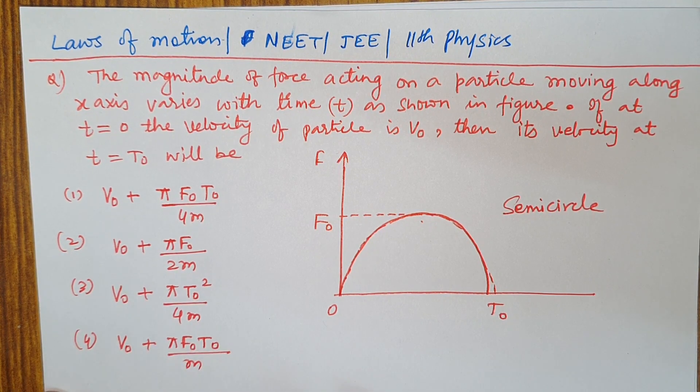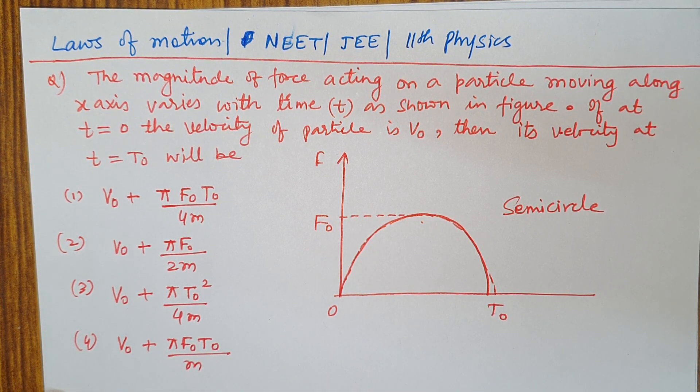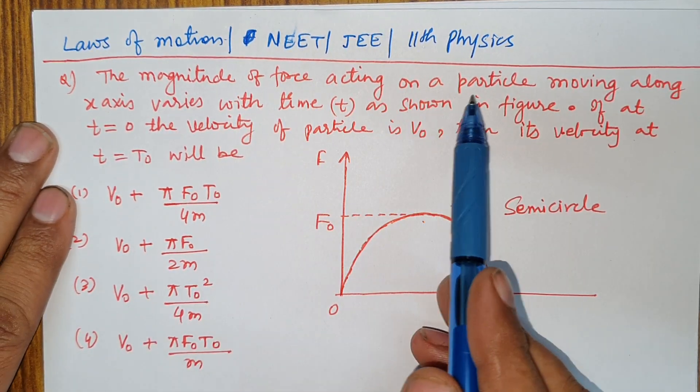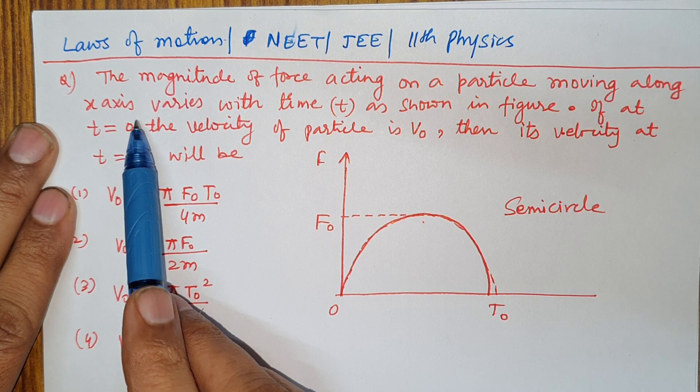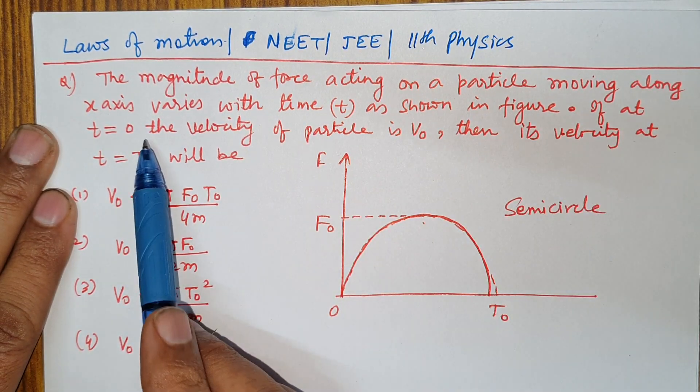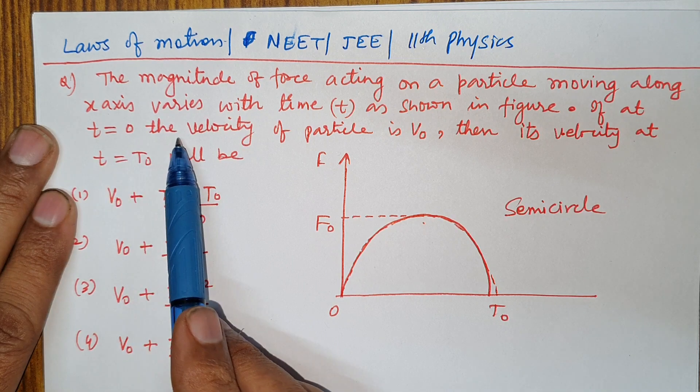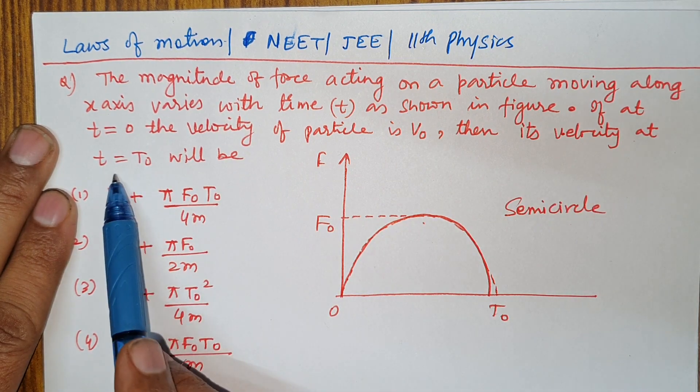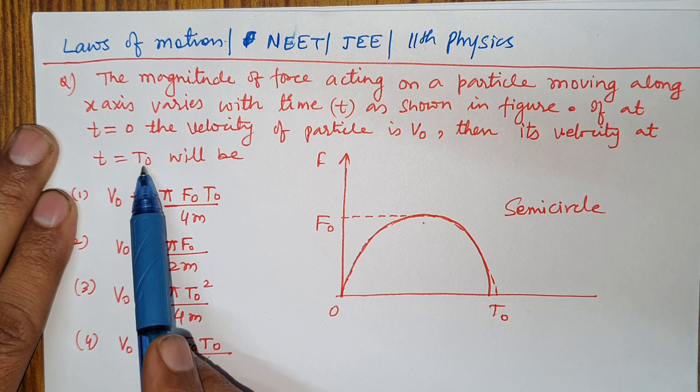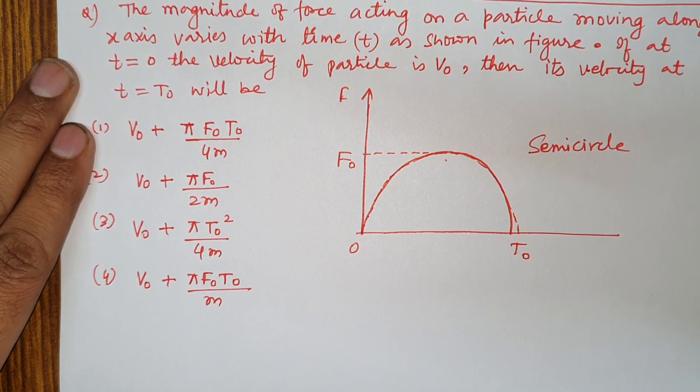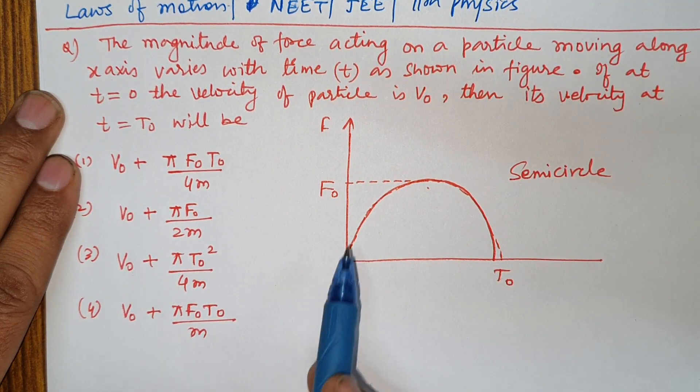Hello dear students, laws of motion NEET question. The magnitude of force acting on a particle moving along x-axis varies with time as shown in figure. If at t=0 the velocity of the particle is v0, then its velocity at t=t0 will be. This diagram is what we have asked.